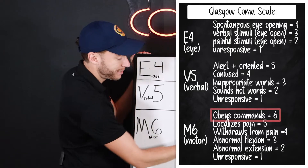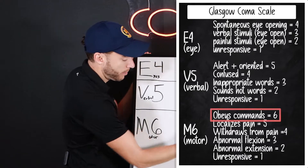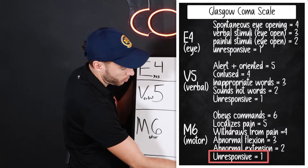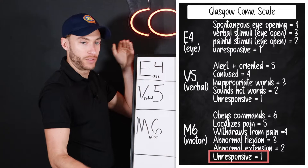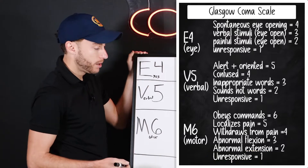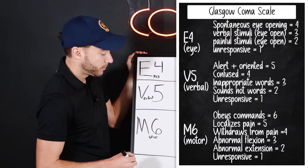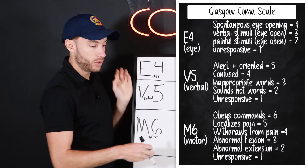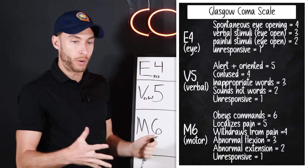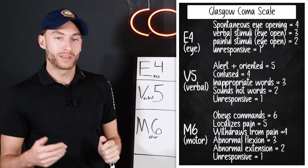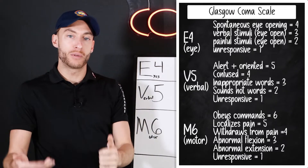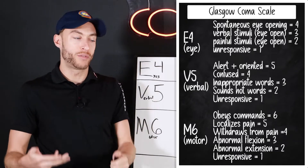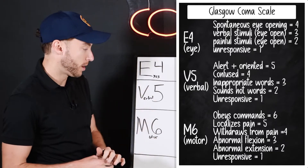For the motor component of the GCS, we have six for obeying commands and one for unresponsive. Let's fill in the middle. This part has to do with applying a painful stimulus and how the patient responds to it.